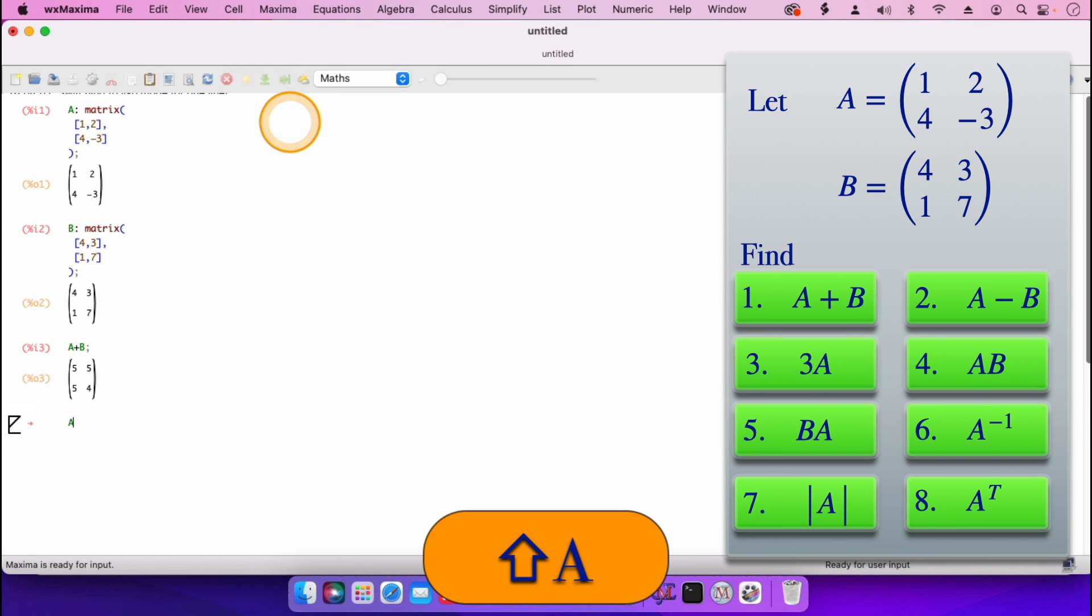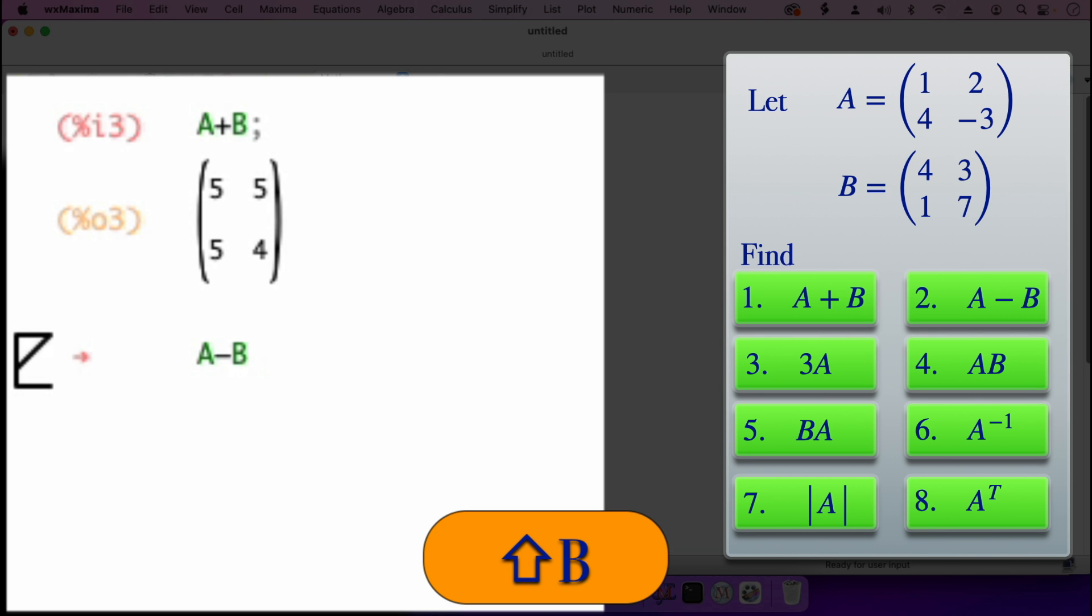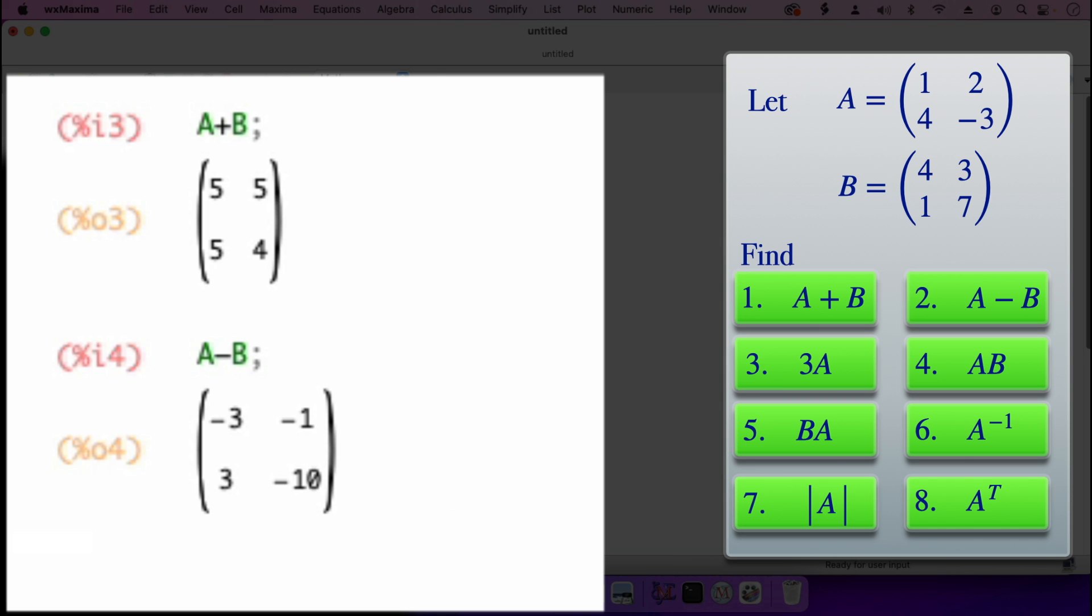For A minus B, it's just A minus B. Then shift enter. So A minus B gives us minus three, minus one, three, minus ten.